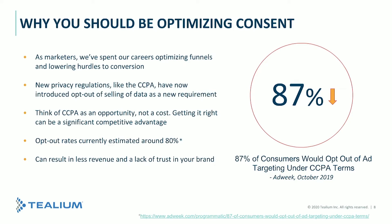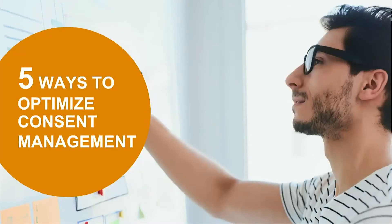Optimizing consent has real ramifications. According to AdWeek's October 2019 survey of media and publishing companies, 87% of consumers would opt out of ad targeting under CCPA terms. For marketers and brands, that could result in less revenue and a lack of trust. That's why Julian is going to take us through concrete ways to optimize consent, because it has a real impact on outcomes.